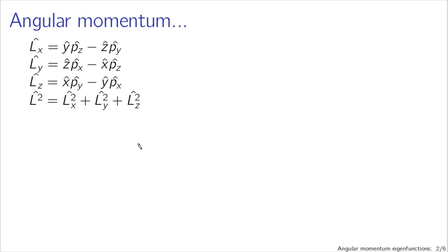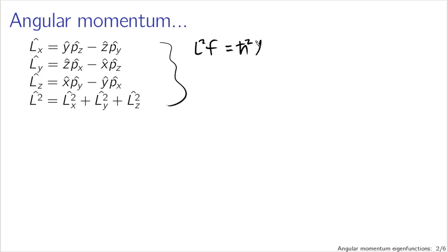The angular momentum operators we were working with in the last lecture are expressed in Cartesian coordinates. This was very nice because the Cartesian form has a nice symmetry to it and we could calculate commutators easily. Just by manipulating these, we were able to derive expressions like the eigenfunctions of L squared had the form h-bar squared L(L+1) as the eigenvalue, and for L sub Z, eigenvalues of the form M times h-bar.